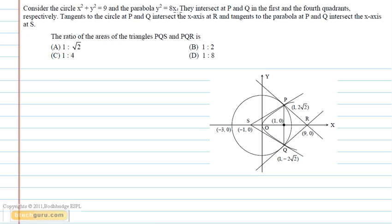To find the intersection points, we solve the circle and the parabola and we get the intersection points as 1, 2√2 which is P, and 1, -2√2 which is Q.